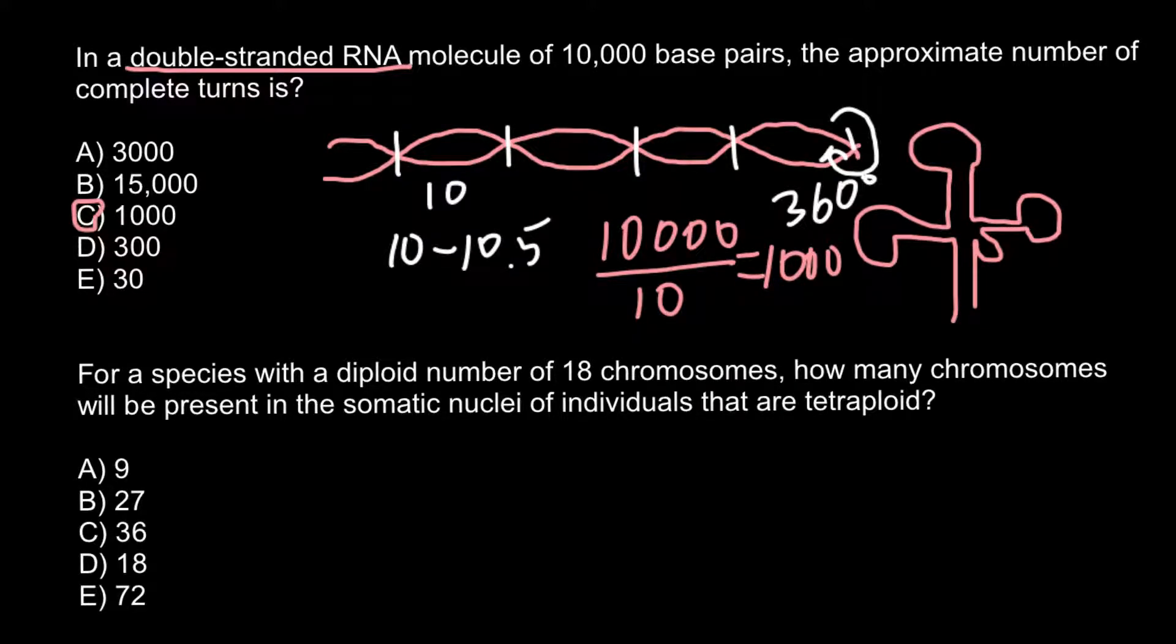Next question: for a species with a diploid number of 18 chromosomes, how many chromosomes will be present in the somatic nuclei of individuals that are tetraploid? First of all, let's talk about terminology.